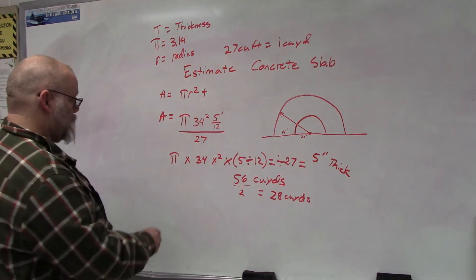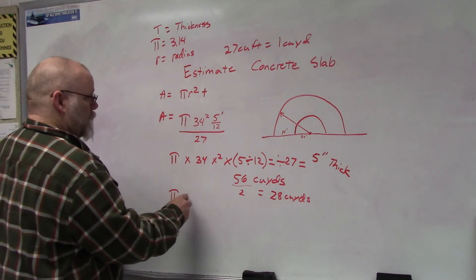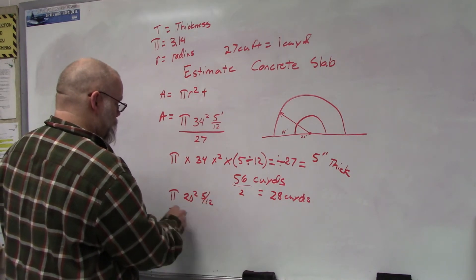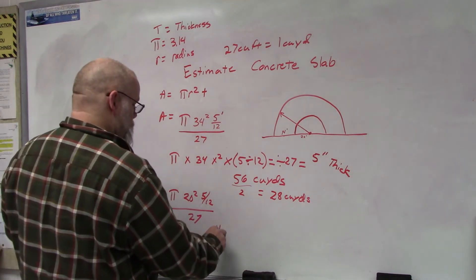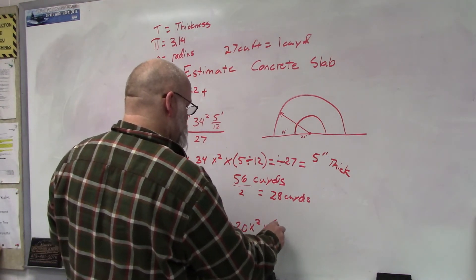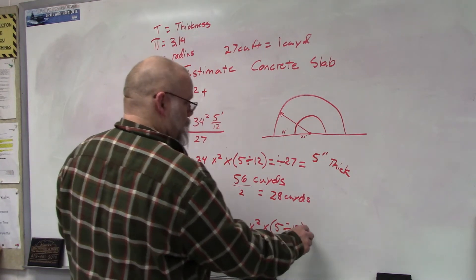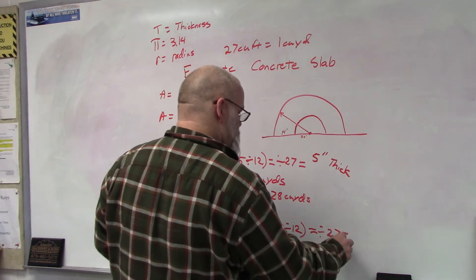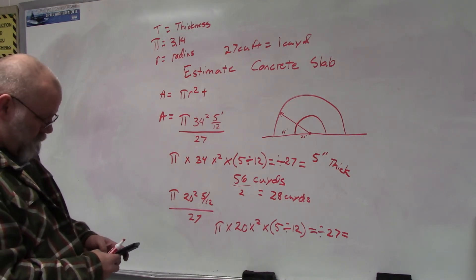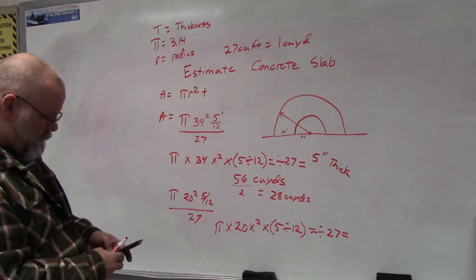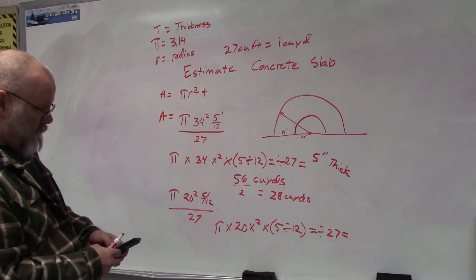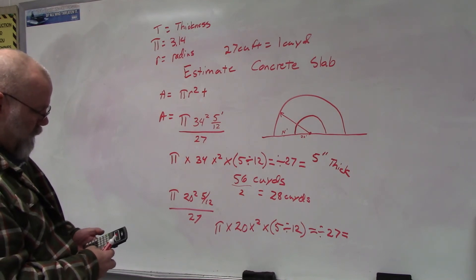It would be π, this time it's 20 feet, so 20 squared times 5 over 12 divided by 27. So you have π × 20² × (5÷12) ÷ 27. π × 20 squared × parentheses 5 divided by 12, close parentheses, equals, divided by 27, equals. I have 19.39.